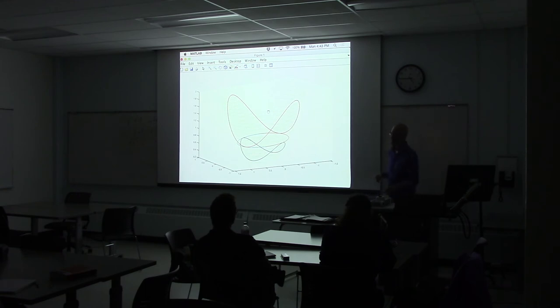But usually if V dot is less than zero somewhere, you're usually okay. You can design some kind of controller. But it's only in the case where V dot is not less than zero anywhere that your controller isn't working.